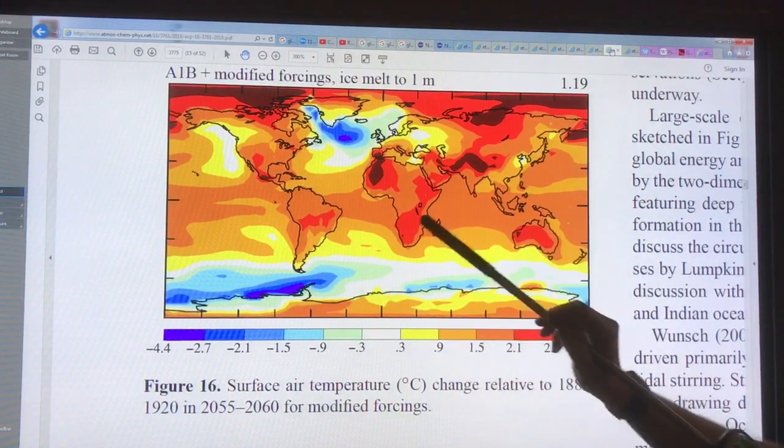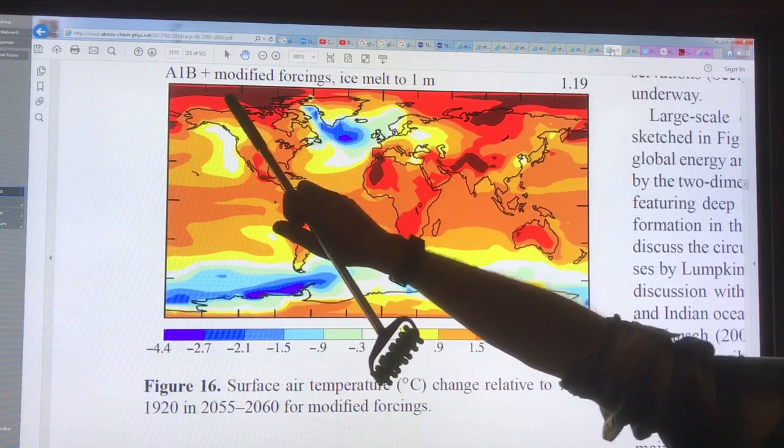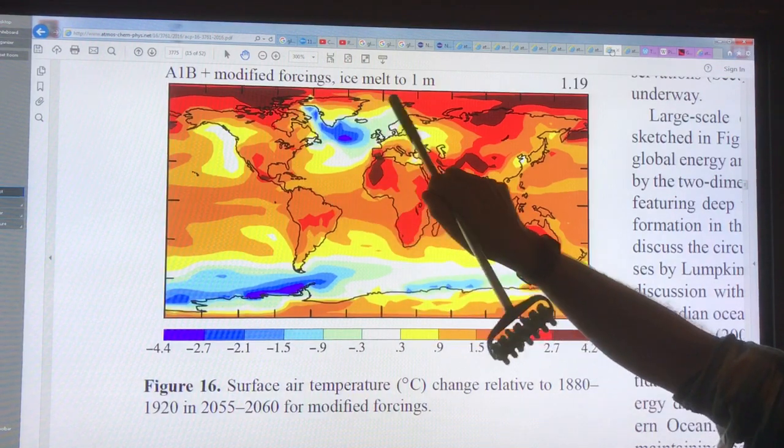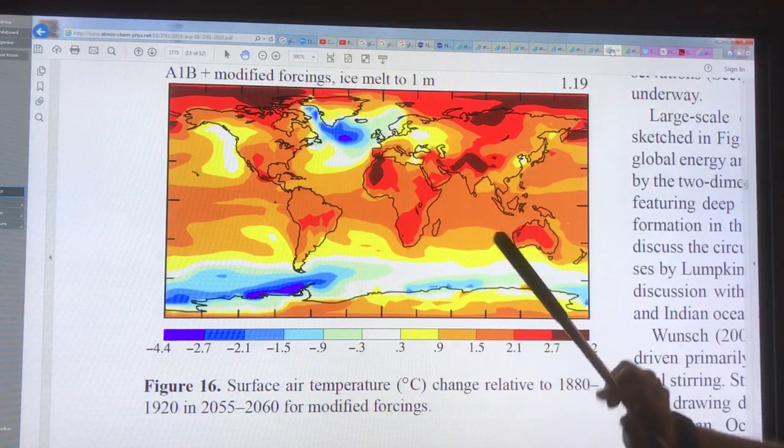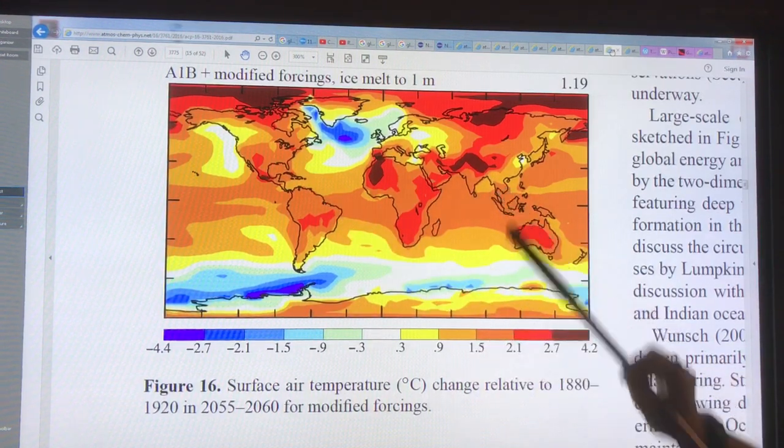We're still getting lots of polar warming, lots of Arctic temperature amplification, but not so much near this region. We're also seeing the continents warming more than the oceans.